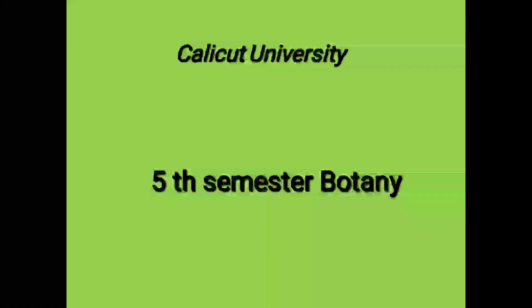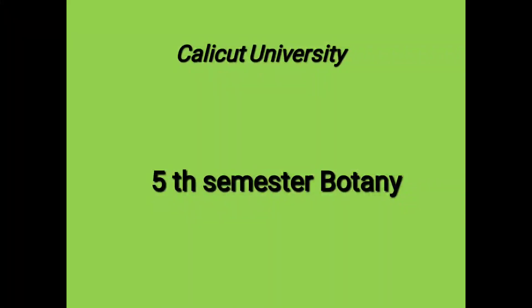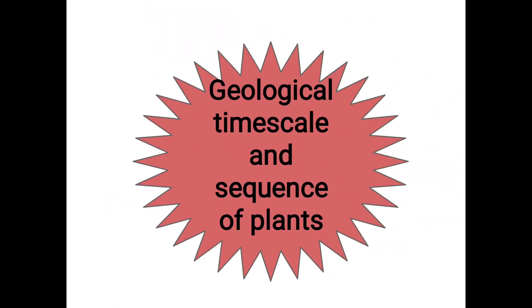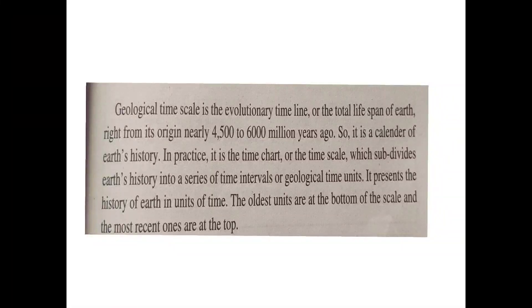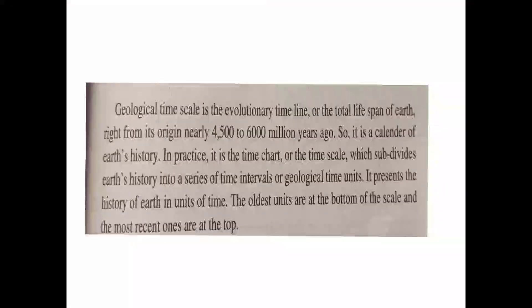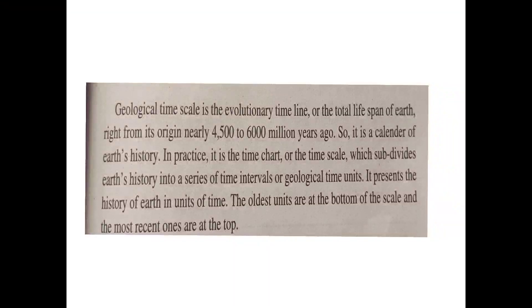Hello, welcome all. Another topic is Geological Time Scale and Sequence of Plants. Geological Time Scale is evolutionary — it means Earth's evolutionary timeline, which means the total life span from nearly 4,500 to 6,000 million years ago. Geological Time Scale is also called the Calendar of Earth History.